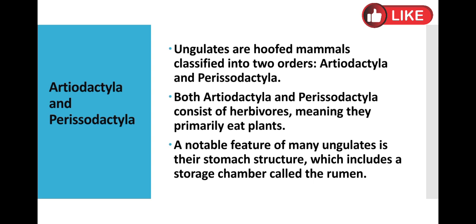Now let's think about the differences between Artiodactyla and Perissodactyla. An even number of toes present on the feet of a mammal is called Artiodactyla, while an odd number of toes on the feet is called Perissodactyla.